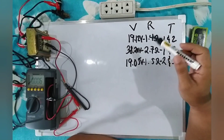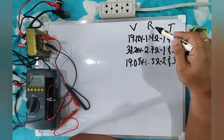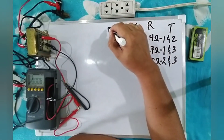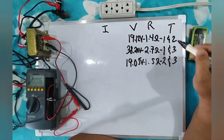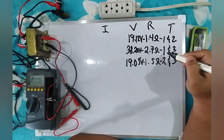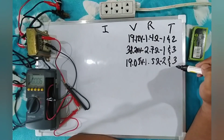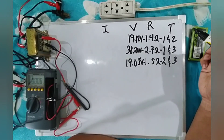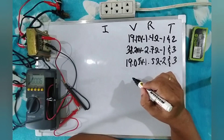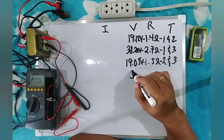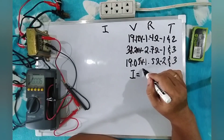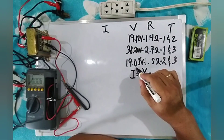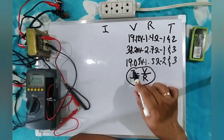Now that we have both the voltage measurements and the resistance measurements, we can compute the no-load current of terminal one and two, terminal one and three, and terminal two and three using Ohm's Law. The Ohm's Law formula is: current is equal to voltage over resistance.